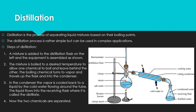In the condenser section, the gas we are boiling off is going to start cooling because it has cold water and cold glass around it, cooling that whole chamber and condensing the gas back into a liquid. The vapor is cooled back to a liquid by the cold water flowing around the tube. The liquid flows into the receiving flask where it's called the distillate. As the gas cools it turns into droplets and drips down into the flask. The apparatus stays at an angle to help facilitate the liquid dripping into the flask.